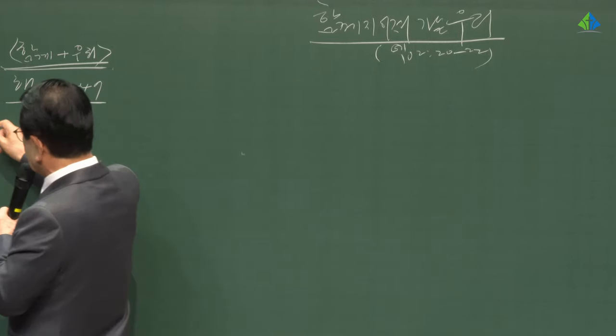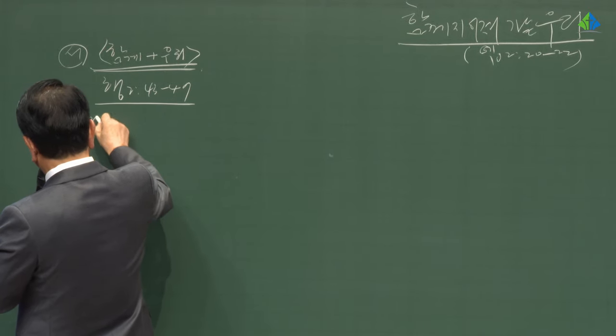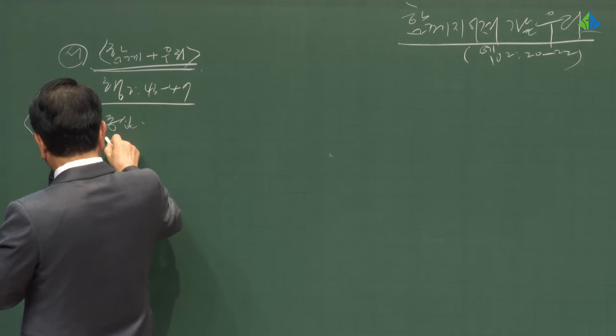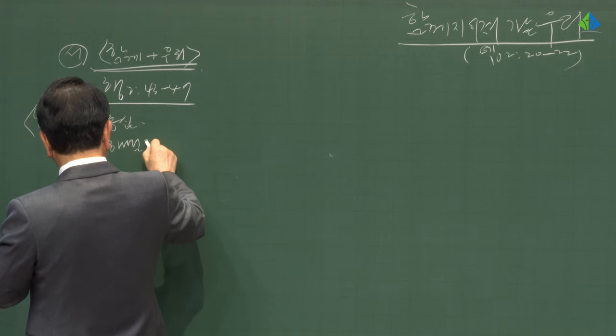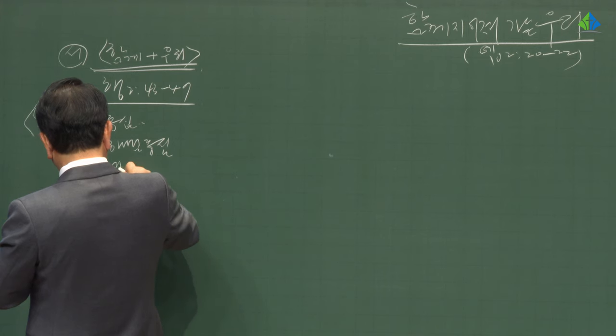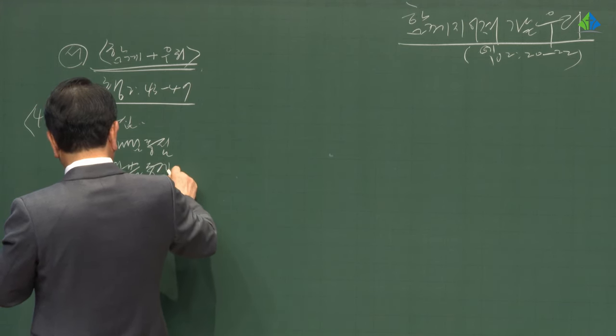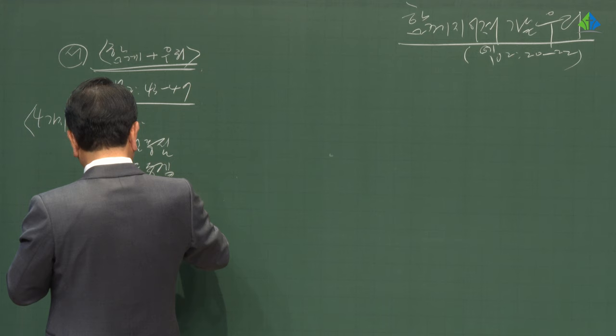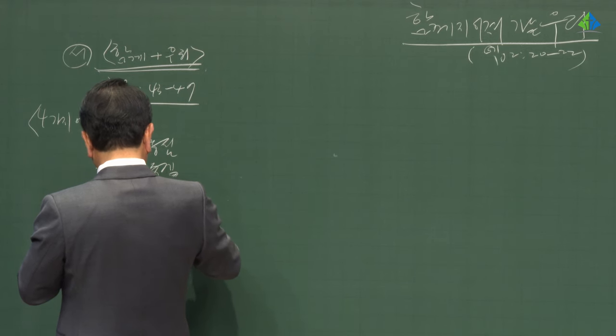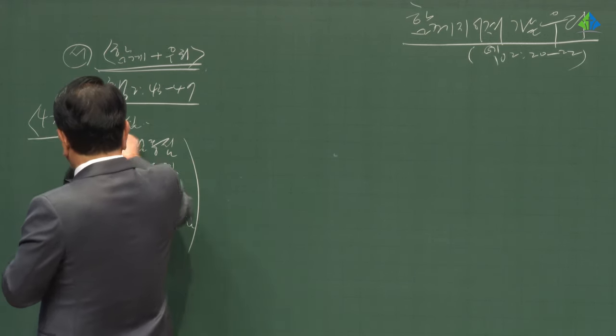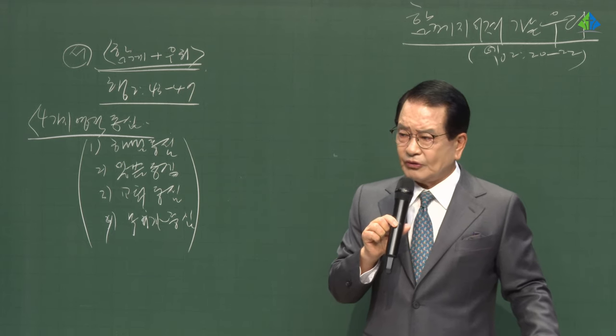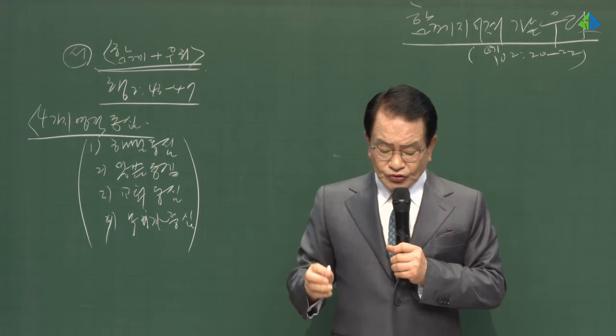제가 이 중직자에게 항상 강조하는 네 가지가 있어요. 네 가지. 이 네 가지 여러분 평생 기억하시기 바랍니다. 이 영적 중심이 네 가지. 중심 이게 뭐예요. 늘 뭐예요. 하나님 중심. 말씀 중심. 교회 중심. 목회자 중심. 언제나 그 중심이 여기 나라는 게 없습니다. 그러니까 언제나 하나님 중심 말씀 중심 교회 중심 목회자 중심. 그런 중심으로 신앙생활에.